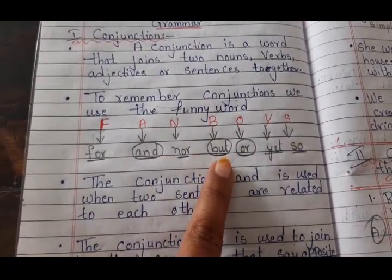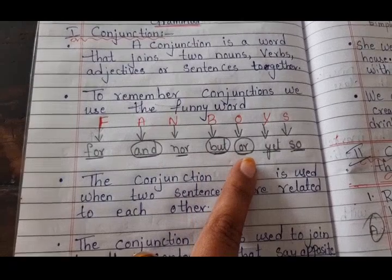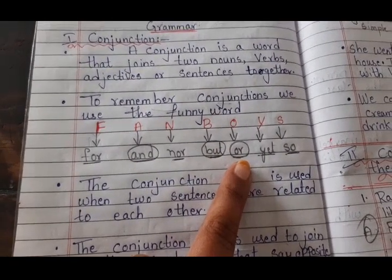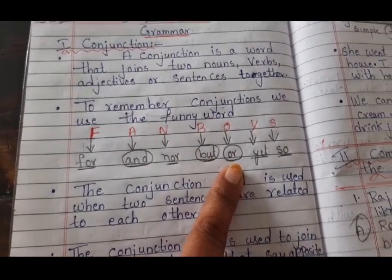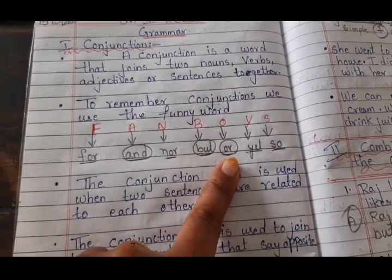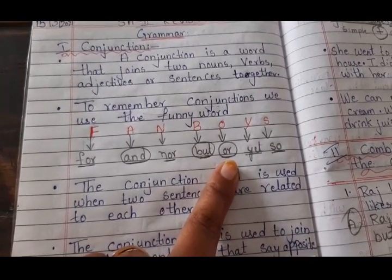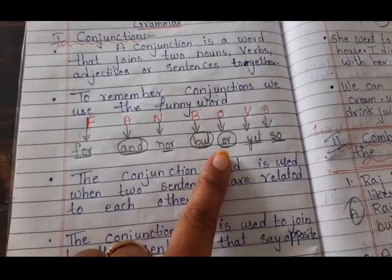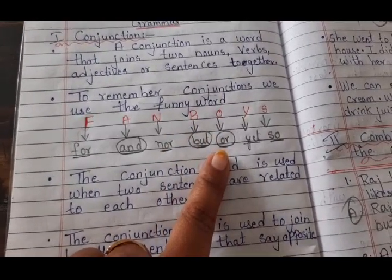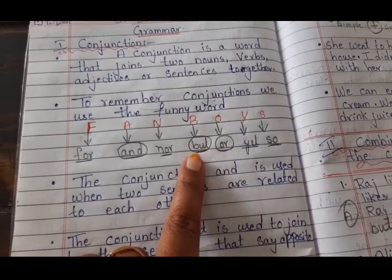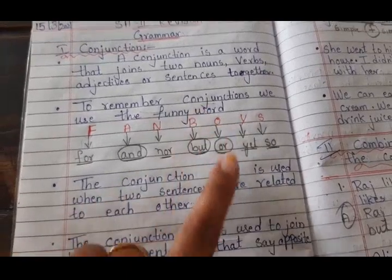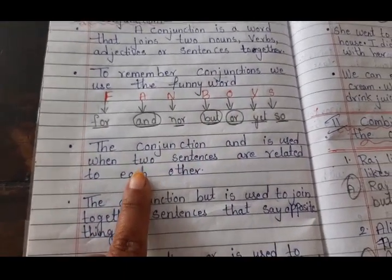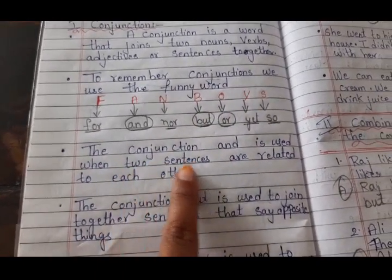But and, but, or are the words which we use in most of the conjunctions to join two simple sentences together — to make a compound sentence. See the conjunctions next.